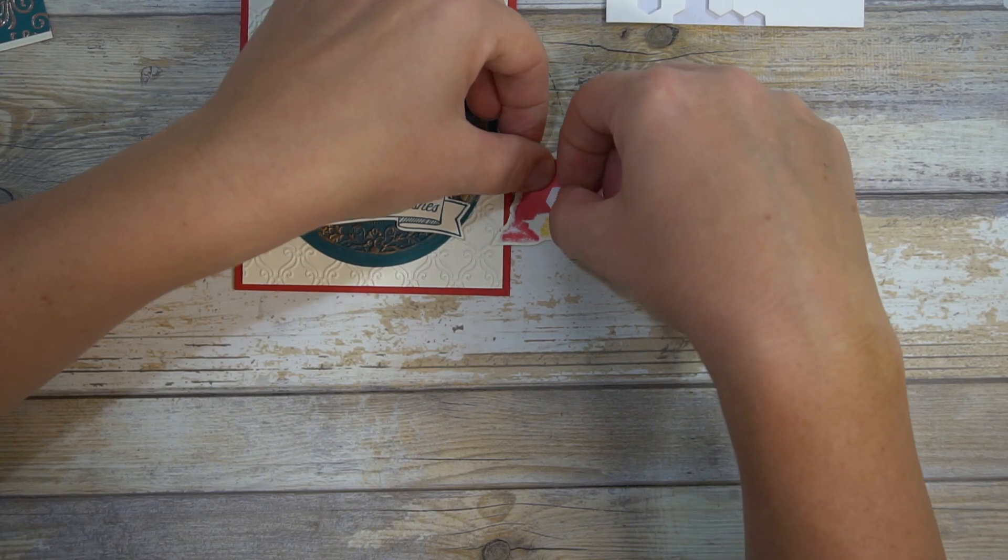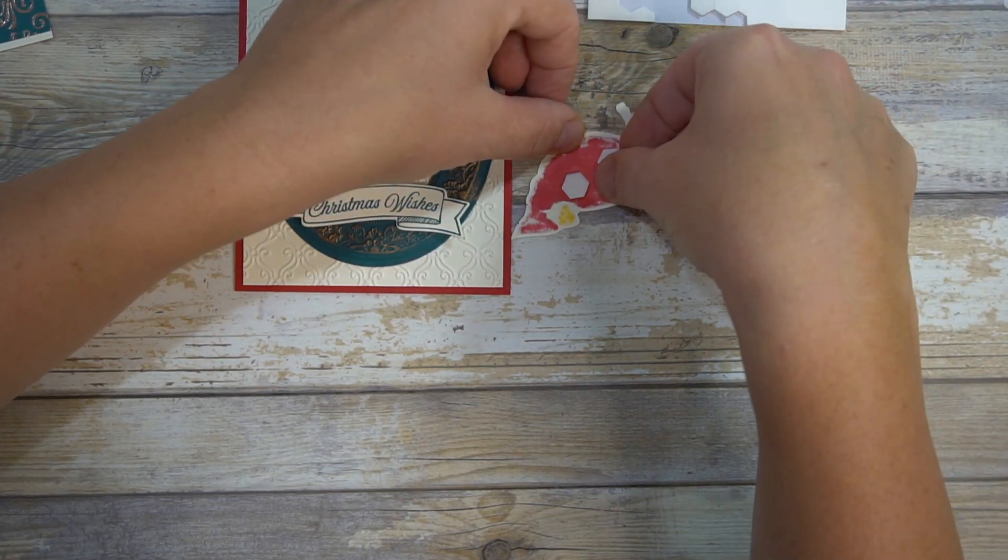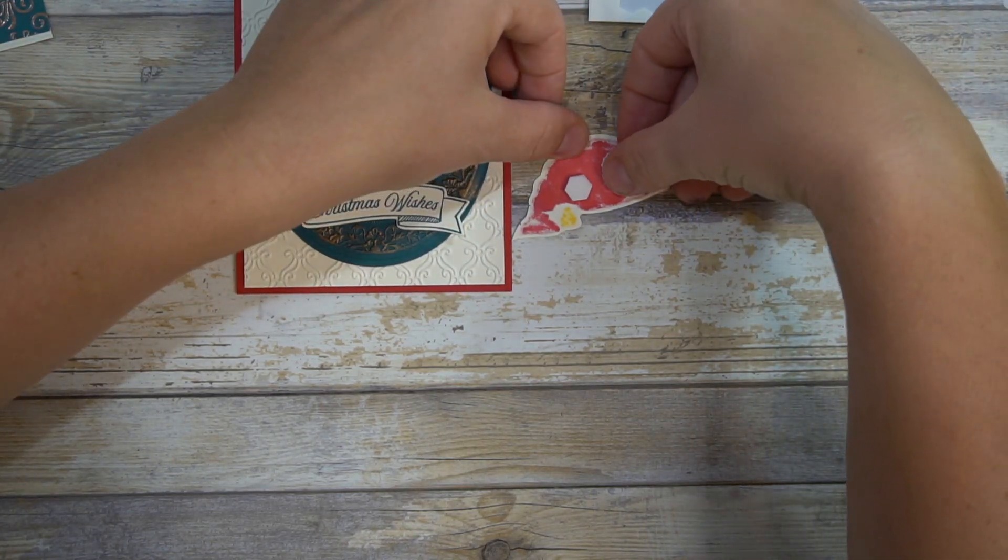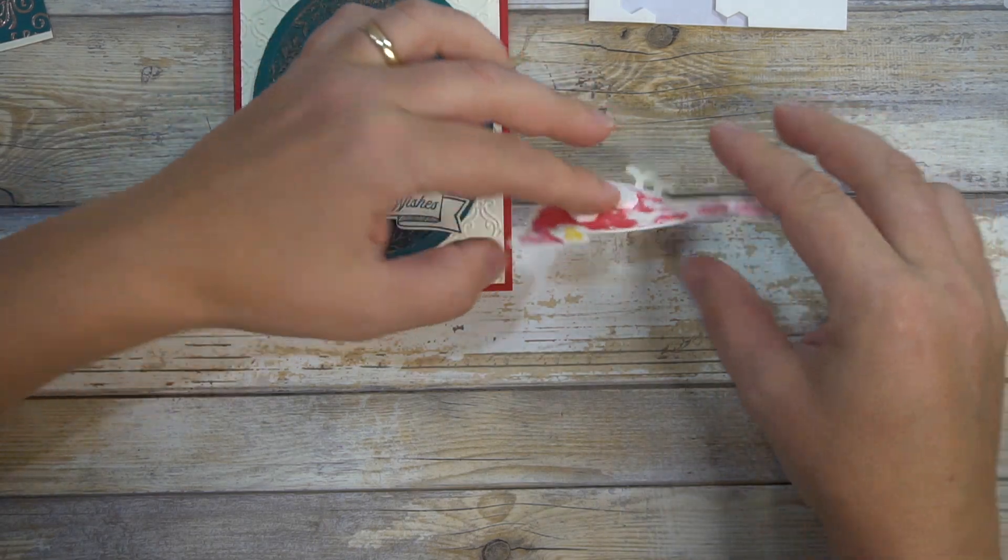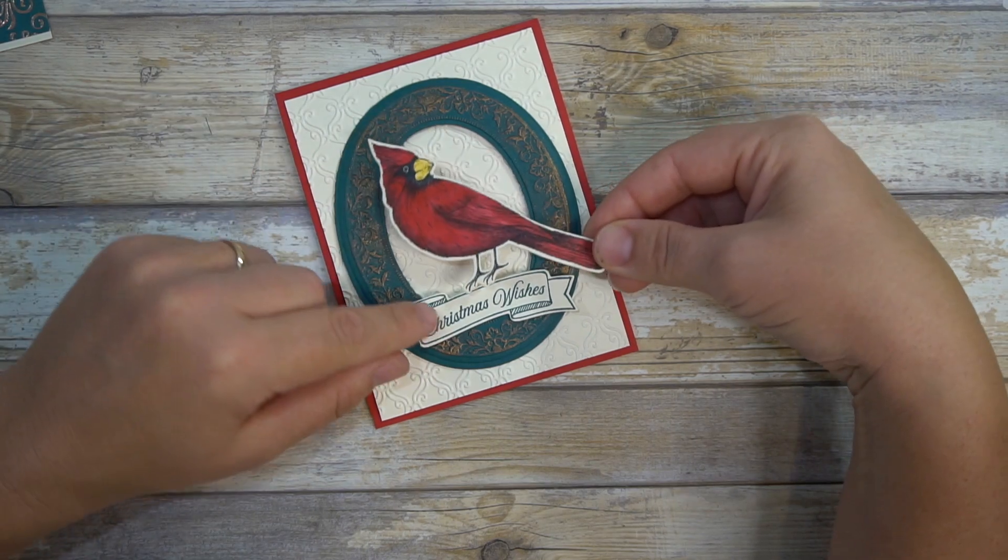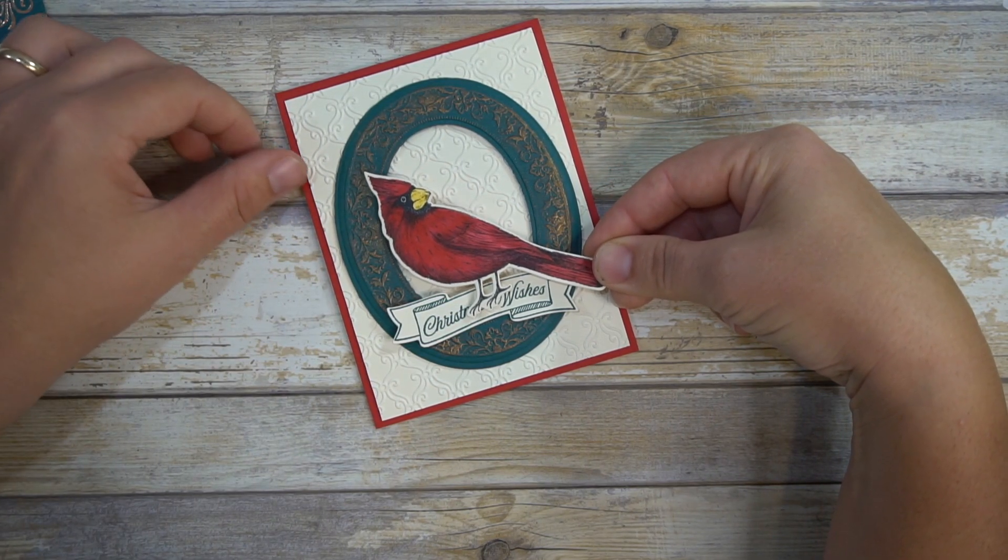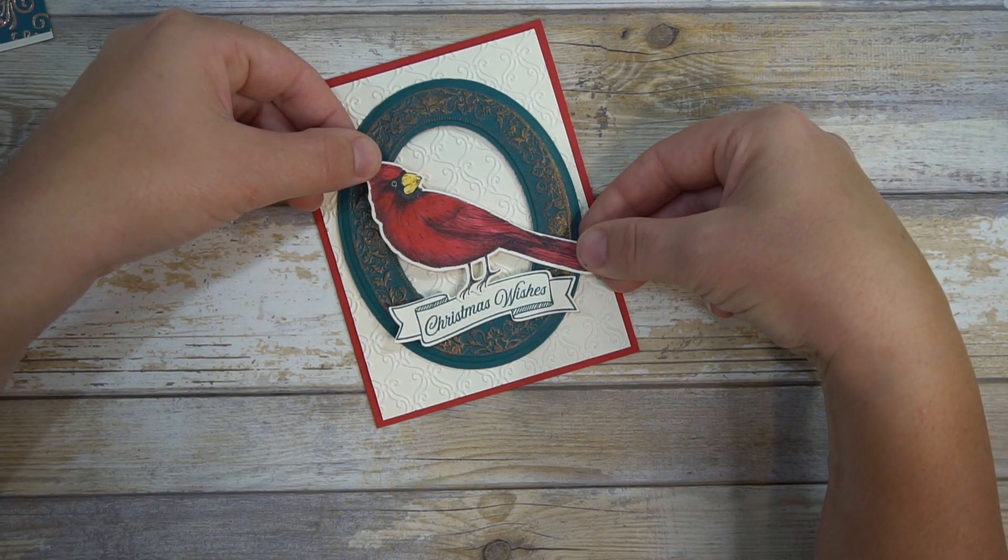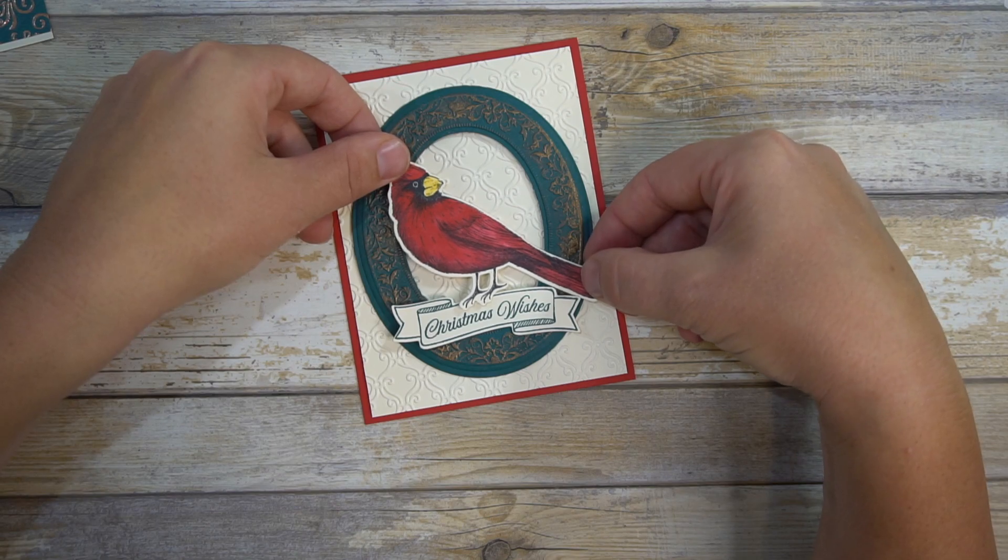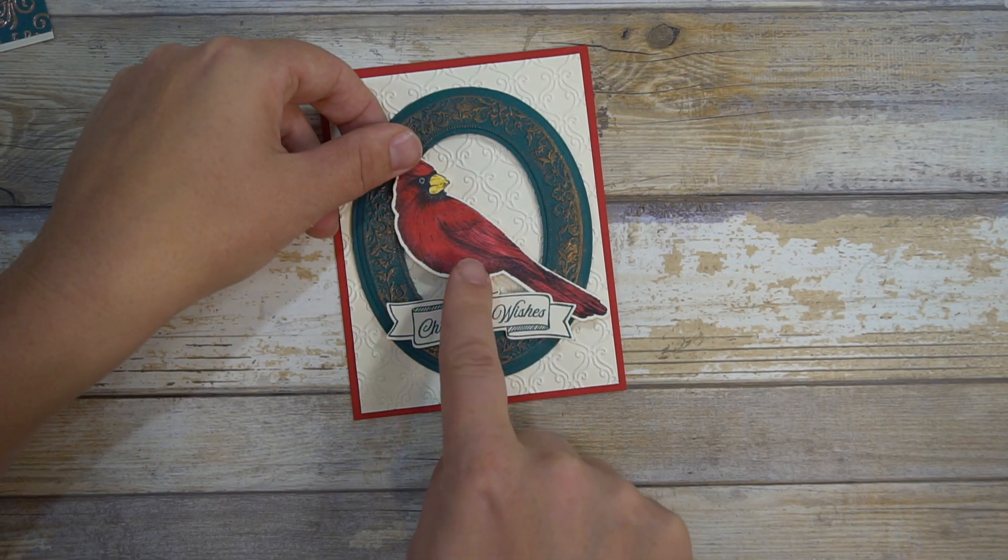Again we're going to double stack some dimensionals and we're going to pop this bird up too. I love cardinals, they're so pretty, it's just such a symbol of Christmas to me. When adding this be sure that you are not having him float but then again you don't want to cover your sentiment. I'm going to tuck the tail feather behind, I kind of like that look.